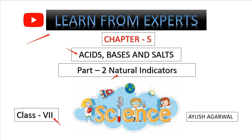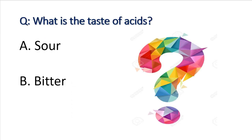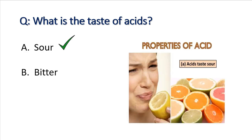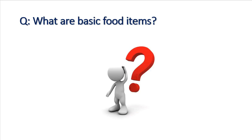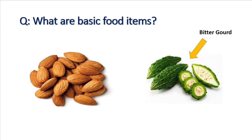Before coming to today's topic, let me ask you questions to check what you learned in the previous video. What is the taste of acids? The answer is sour — for example, lemons and oranges. What are basic food items? The answer is almonds, bitter gourd, and broccoli. How many of you got both answers correct? Let me know in the comment section.